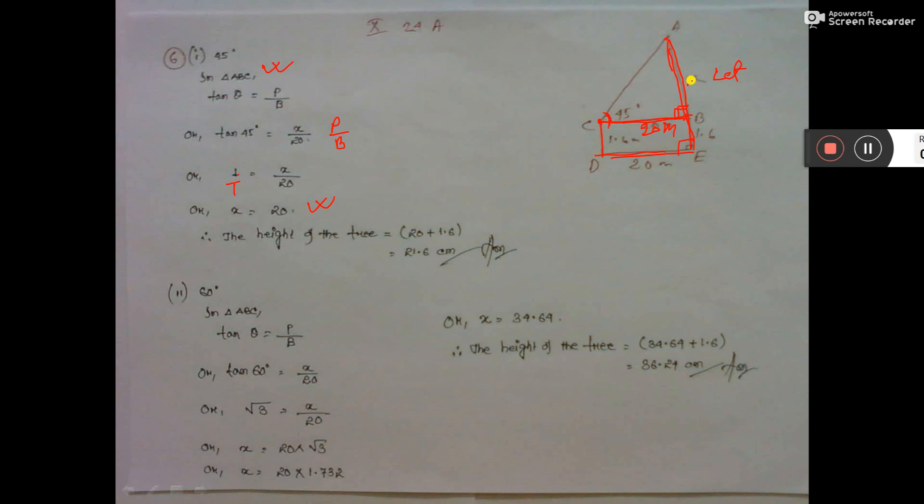This length is 20, and this is the height of the boy, 1.6. So this will also be 1.6. Then the tower height will be 20 plus 1.6, so 21.6 is the height of the tower for the 45-degree angle.